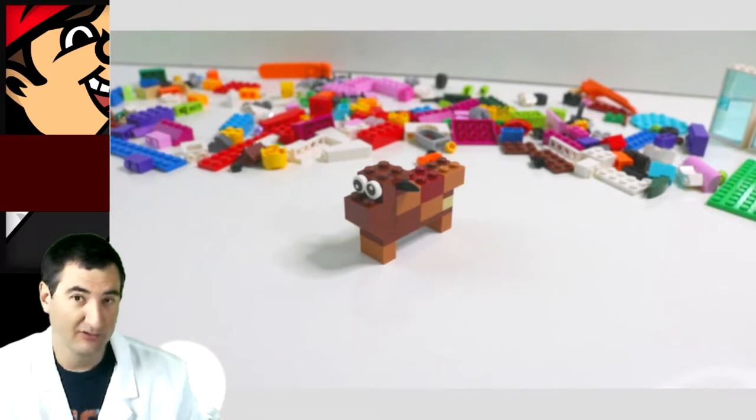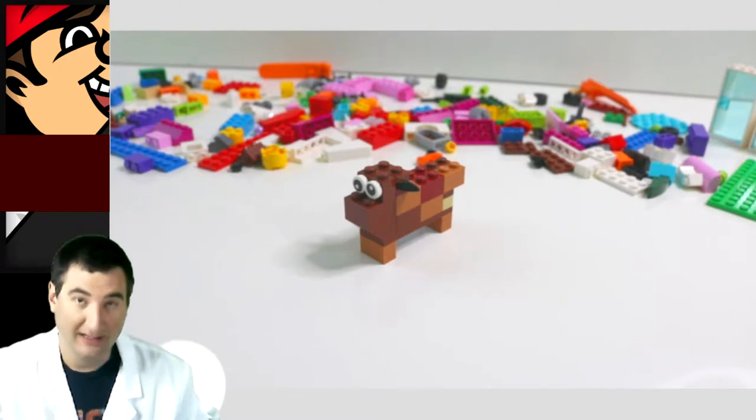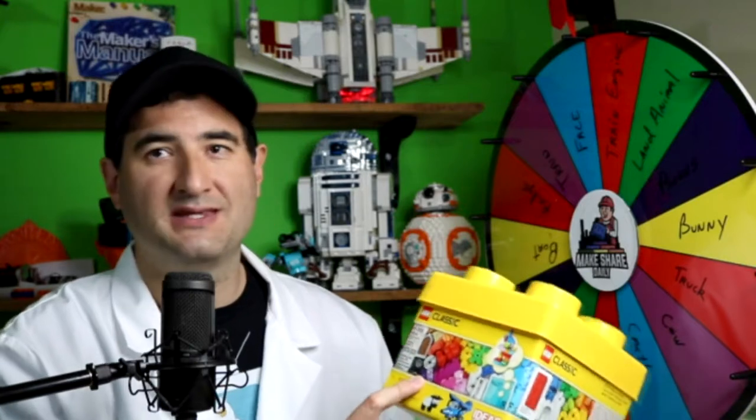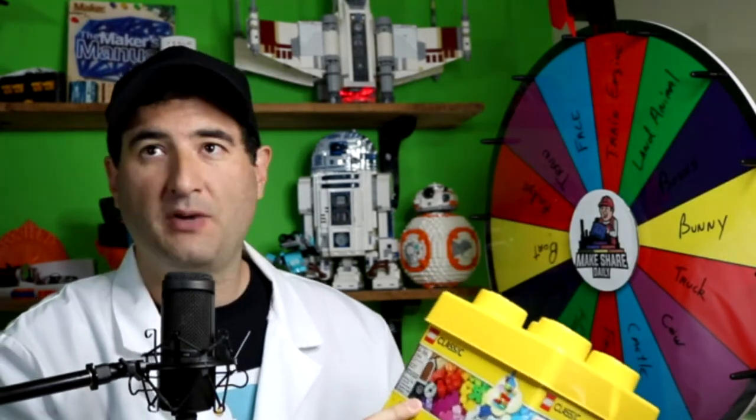Thanks so much for watching here at Make Share Daily. We love to make things, especially with LEGOs, so these five minute challenges are a lot of fun. If you want to play along, go ahead and pick up this classic LEGO box with 221 pieces. You can pick them up for about $15 at your local Walmart or Target. Then you can play along or just use any other LEGOs that you have at your house, as long as you build that same topic.